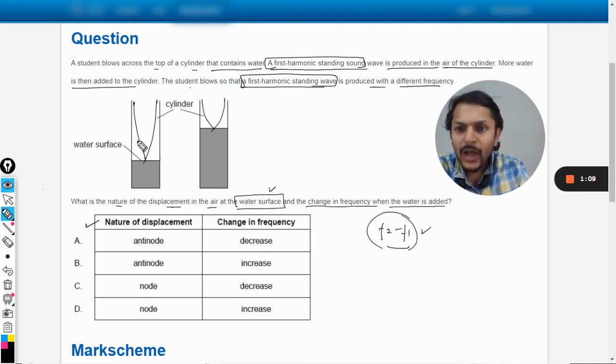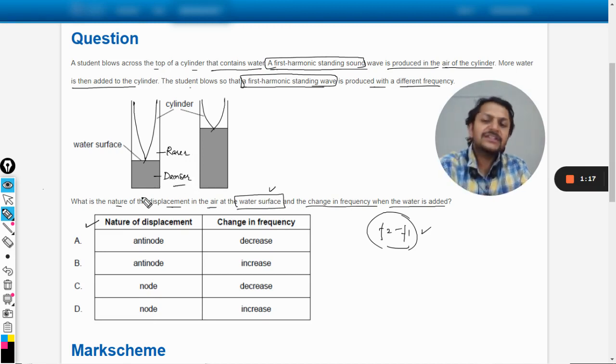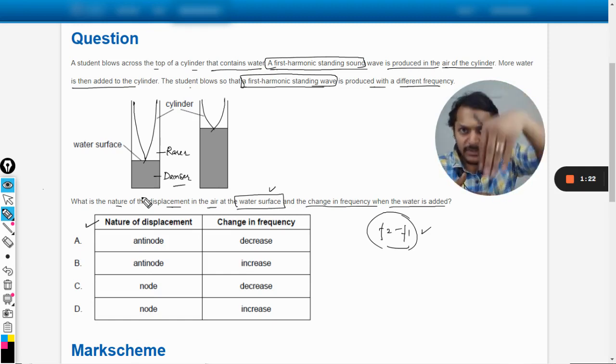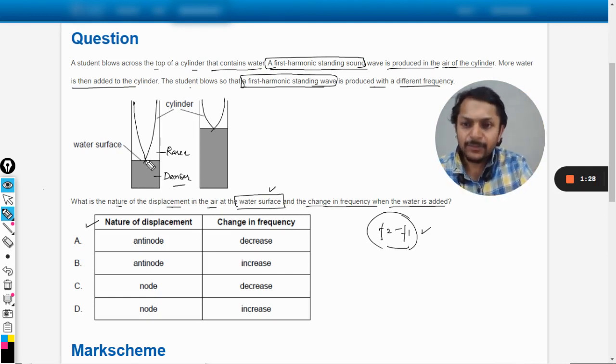The nature of displacement at the surface of the water—many students, at the surface of the water, it is always a node. Why? Because air is a rarer medium and water is a denser medium. So whenever this kind of phenomena is happening where the incoming wave is coming from rarer to denser, the standing waves will be formed and at that point, a node will be created.